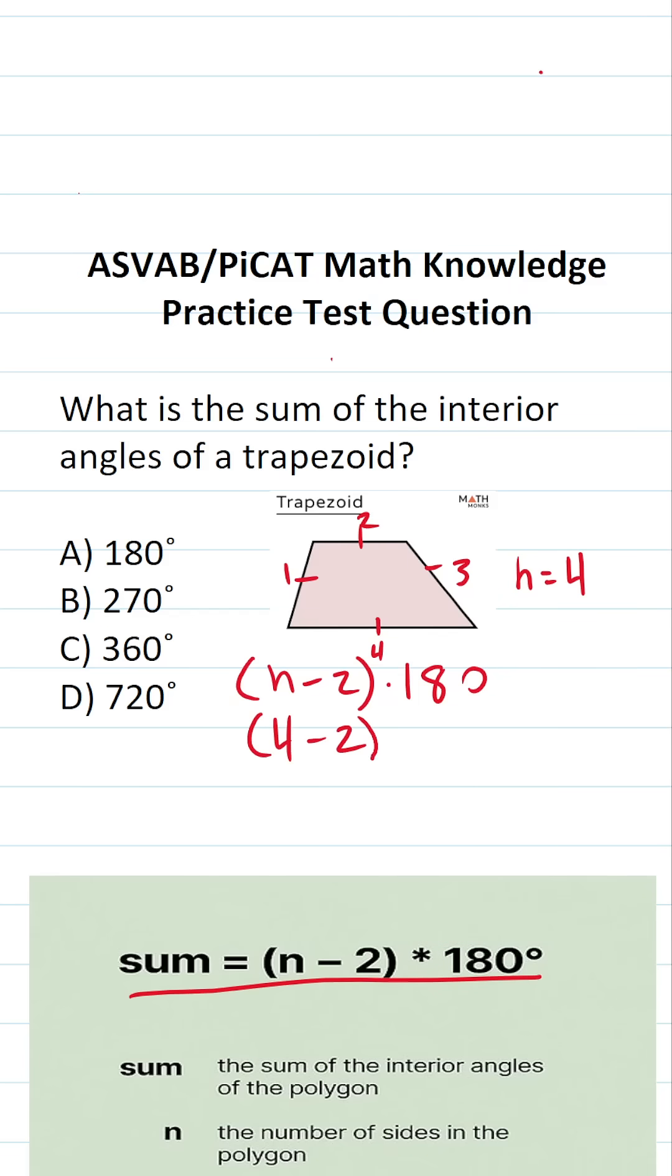This becomes 4 minus 2 times 180. 4 minus 2 is 2. So this is 2 times 180.